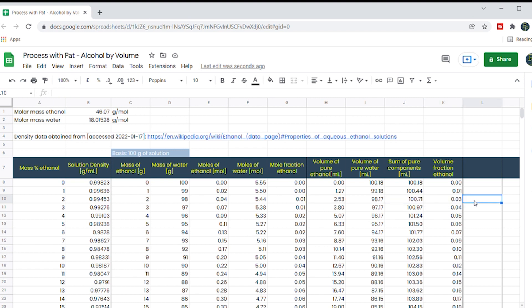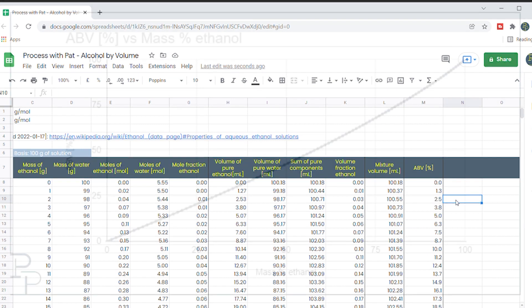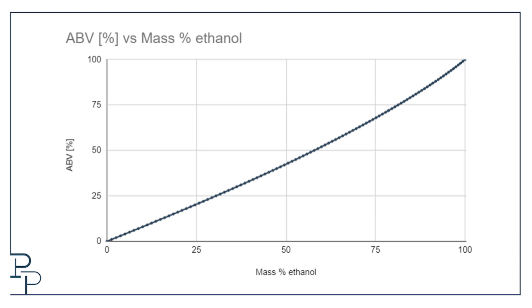Now let's work out the mixture volume. The actual volume of the mixture is simply 100 grams, that's our basis, divided by the solution density from wiki. Now we can work out the alcohol by volume by dividing the volume of ethanol by the mixture volume. You can plot whatever it is you like now, for example here is a nice curve describing the relationship between the mass fraction ethanol and the alcohol by volume.